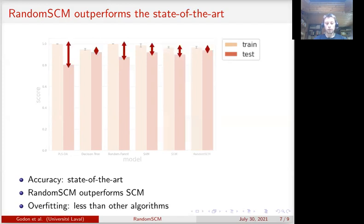Third, random SCM overfits less than random forest and other algorithms, showing the benefits of using more simple models like conjunctions instead of trees.